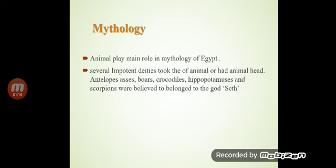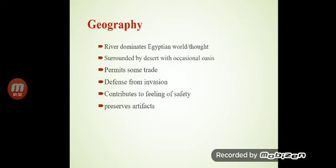Mythology means story. Animals play a main role in the mythology of Egypt. Very important deities took the form of animals or had animal heads. Crops, crocodiles, hippopotamuses, and scorpions were believed to belong to the gods.